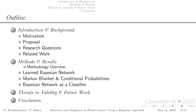First, in the introduction and background we will look at the motivation, proposal, research questions and related work. Then in the methods and results section we will look at the methodology overview, the learned Bayesian network, Markov blanket and conditional probabilities, and the Bayesian network as a classifier. In the next section we will discuss threats to validity and future work. In the last section we will conclude our discussion.